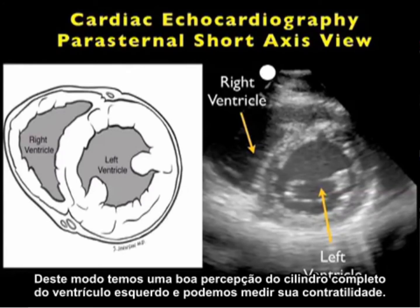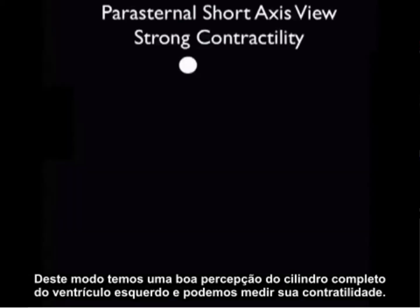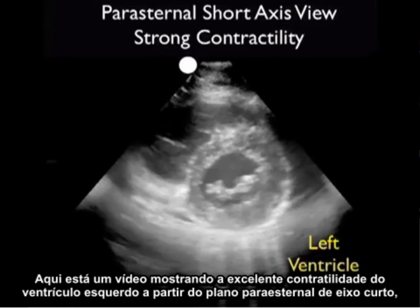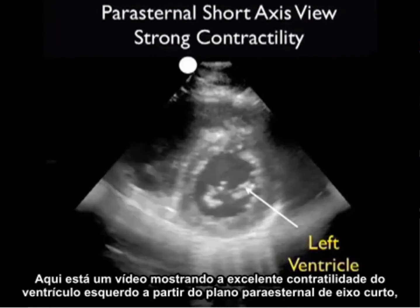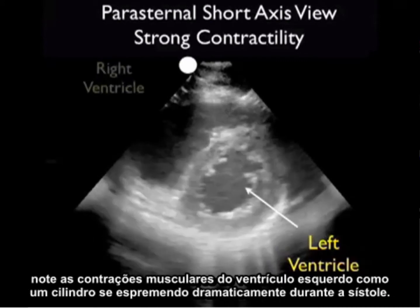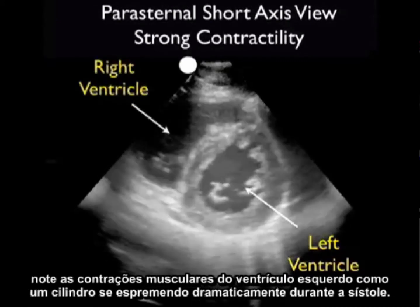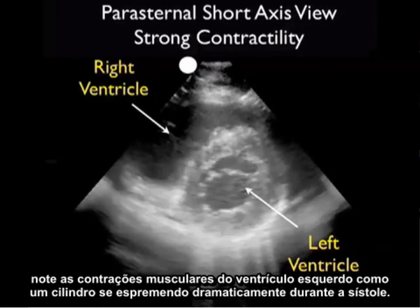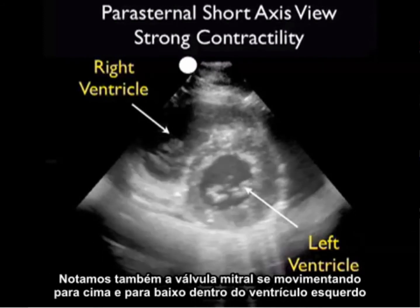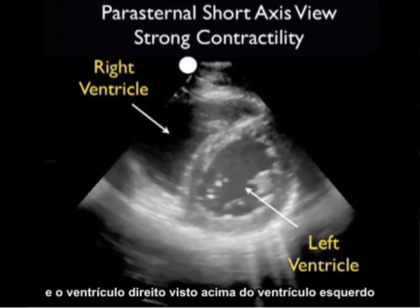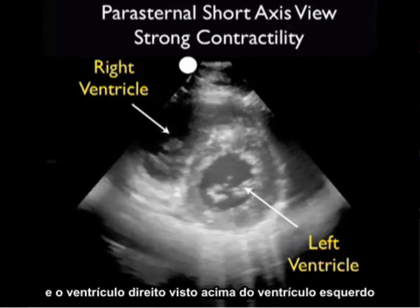In this way, we get a good sense of the overall cylinder of the left ventricle and can gauge its contractility. Here's a video clip showing excellent contractility of the left ventricle from the parasternal short axis plane. Note the muscular contractions as the cylinder squeezes in dramatically during systole. We also note the mitral valve flipping up and down within the left ventricle, and the right ventricle seen up and above the left ventricle.